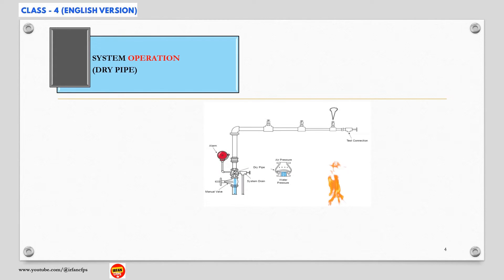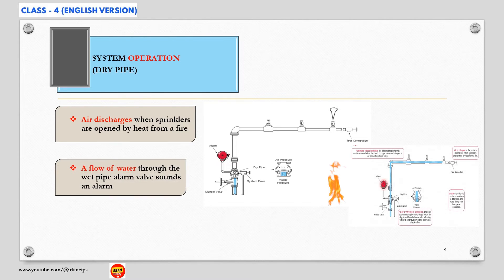However, in this case, water isn't immediately available because the pipe is not water filled. Instead, air is released from the sprinklers that are activated. This creates a drop in pressure causing the dry pipe valve to open and water to fill the system. Water will then flow from the open sprinkler head. A flow of water through the pipe dry valve sounds an alarm.